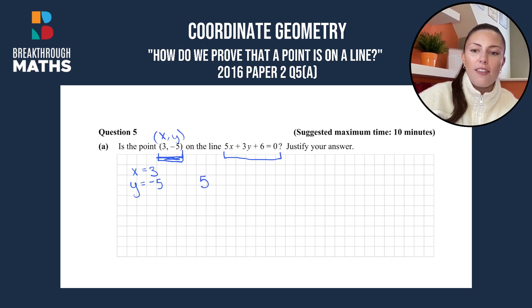So instead of 5x, we'll have 5 times 3 because x is equal to 3, plus 3 times -5. So we've -5 instead of y, and then we finish it off plus 6 is equal to 0.